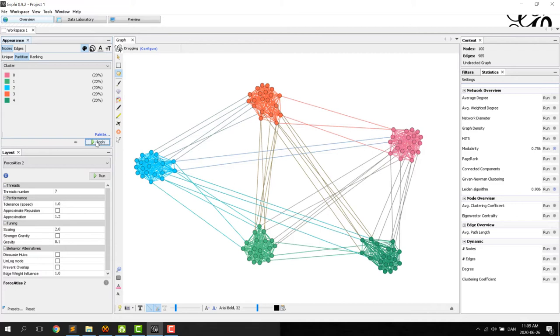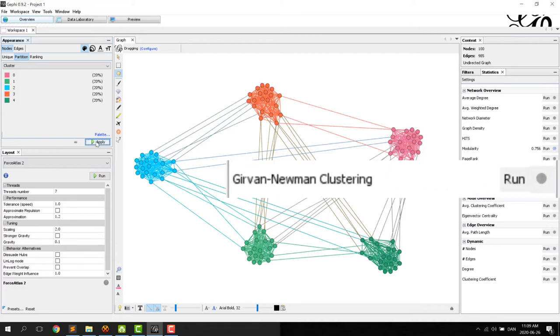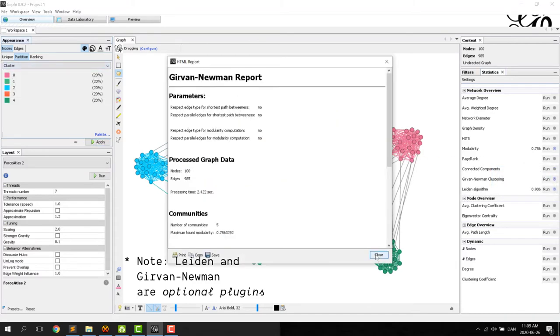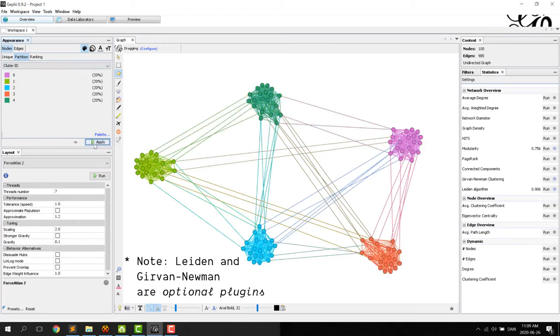Finally, a variant of these algorithms is the Girvan Newman clustering. By the way, Newman was the one showing the way for the three kinds of algorithms. And this one, once again, finds our five clusters.